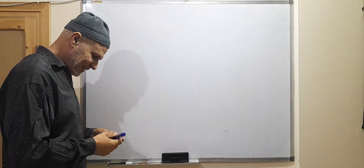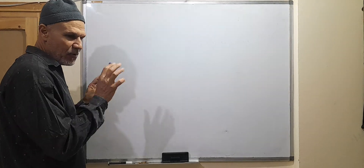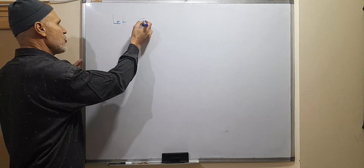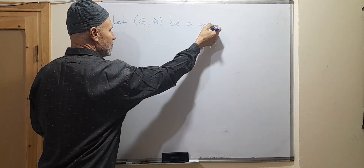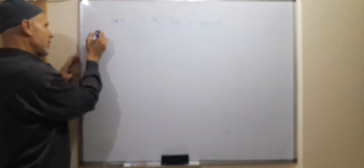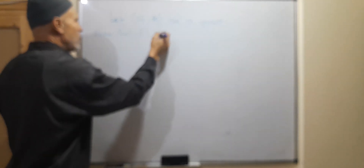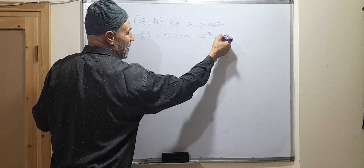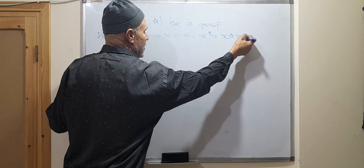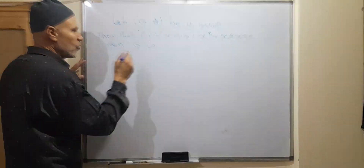Assalamualaikum. Hello everybody. This is actually a short exercise. Let algebra, let G with a star operation be a group. Show that if for all x from G one has x squared — meaning x star x — equal to e, then G is commutative.